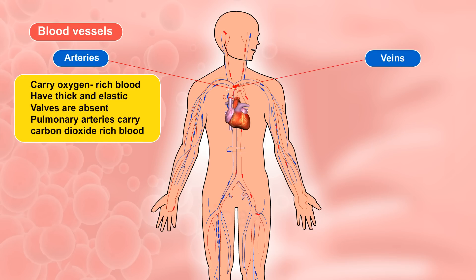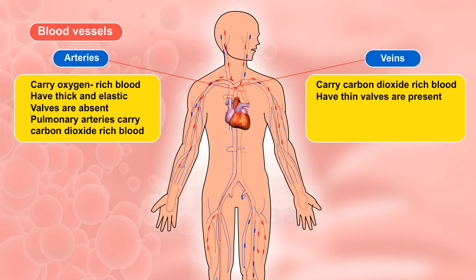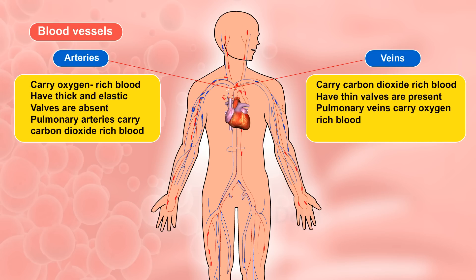Veins. Veins carry carbon dioxide-rich blood from the various parts of the body to the heart. They have thin walls. Veins have valves which prevent the backward flow of blood. Pulmonary veins carry oxygen-rich blood from the lungs to the heart.